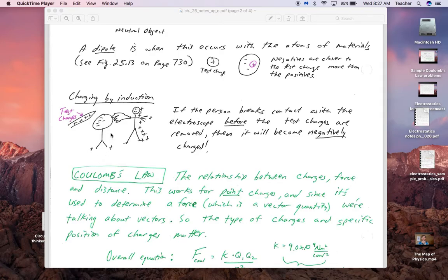If you've got a positive rod nearby, negatives come up to the top, therefore leaving the bottom with a net positive charge. If this is neutral initially, however many positives are up here should initially be the same as negatives up here, the same as the number of positives down here. However, if someone touches this and has a path somewhere else, these negatives then can move on to the person, leaving this with a net positive charge.